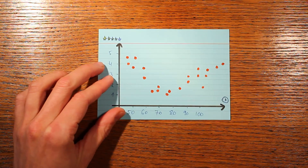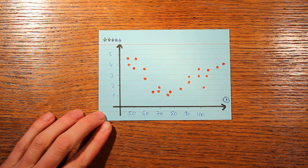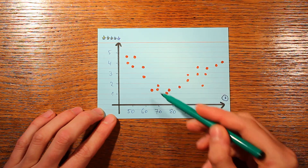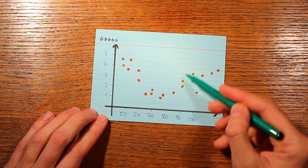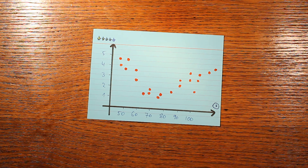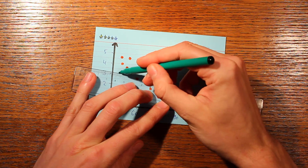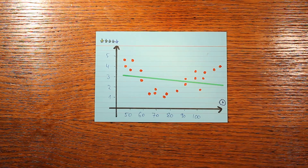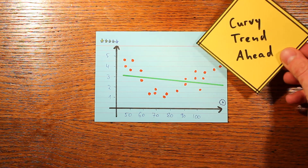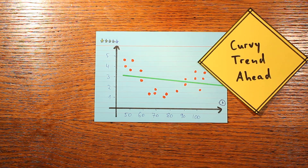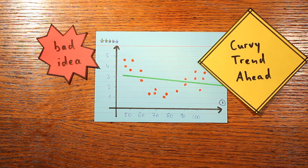Unfortunately, the correlation coefficient also ignores some really useful things, because it only fits a straight line to the data. Consider a data set where short movies get great ratings, medium-length movies get bad ratings, and long movies get good ratings again. If you fit a straight line to this, it's almost level, so the correlation coefficient will be very weak in magnitude — it fails to capture this interesting curved structure. It's a bad idea to use the correlation coefficient to summarize such a scatter plot, and whatever summary statistic you use, it's your responsibility to ensure it gives a fair picture of the data.